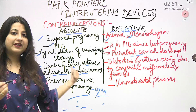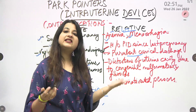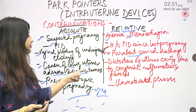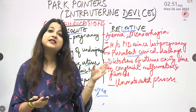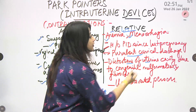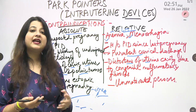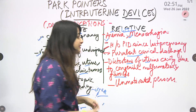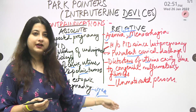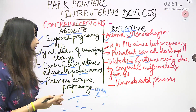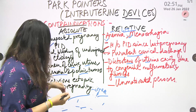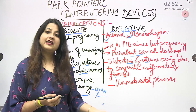Cancers of the cervix, uterus, vagina, adnexa, and pelvic tumors are absolute contraindications, but on the relative side, distortions of the uterine cavity due to any congenital malformation or fibroids become a relative contraindication. And lastly, on the absolute side we had previous ectopic pregnancy, while on the relative side we have an unmotivated person.